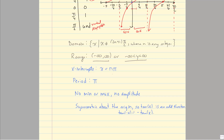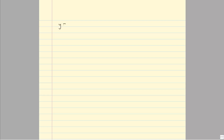Let's go ahead and look at the cotangent graph next. When we talk about the cotangent graph, we need to remember that cotangent is cosine over sine. Here, sine is in the denominator, and so that sine value can never equal zero because that would give us an undefined point.